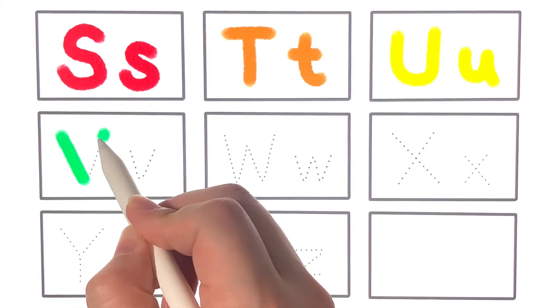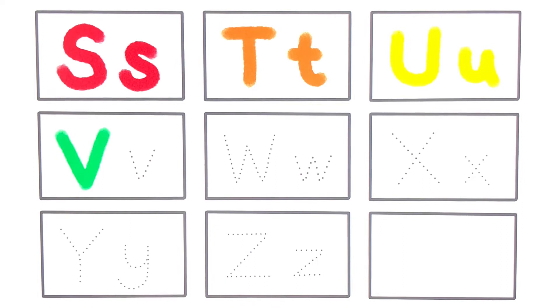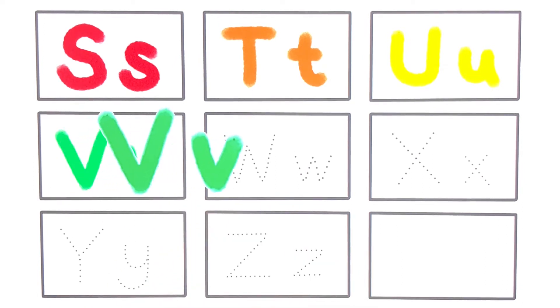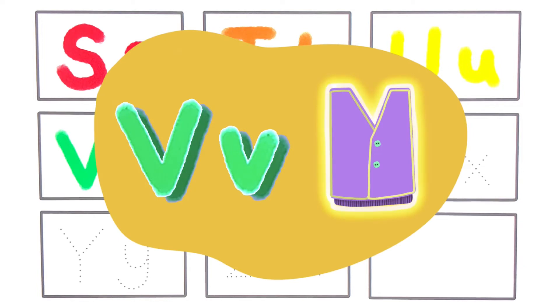W, X, Y, and Z. Now I know my ABCs. Next time won't you sing with me. V for vest.